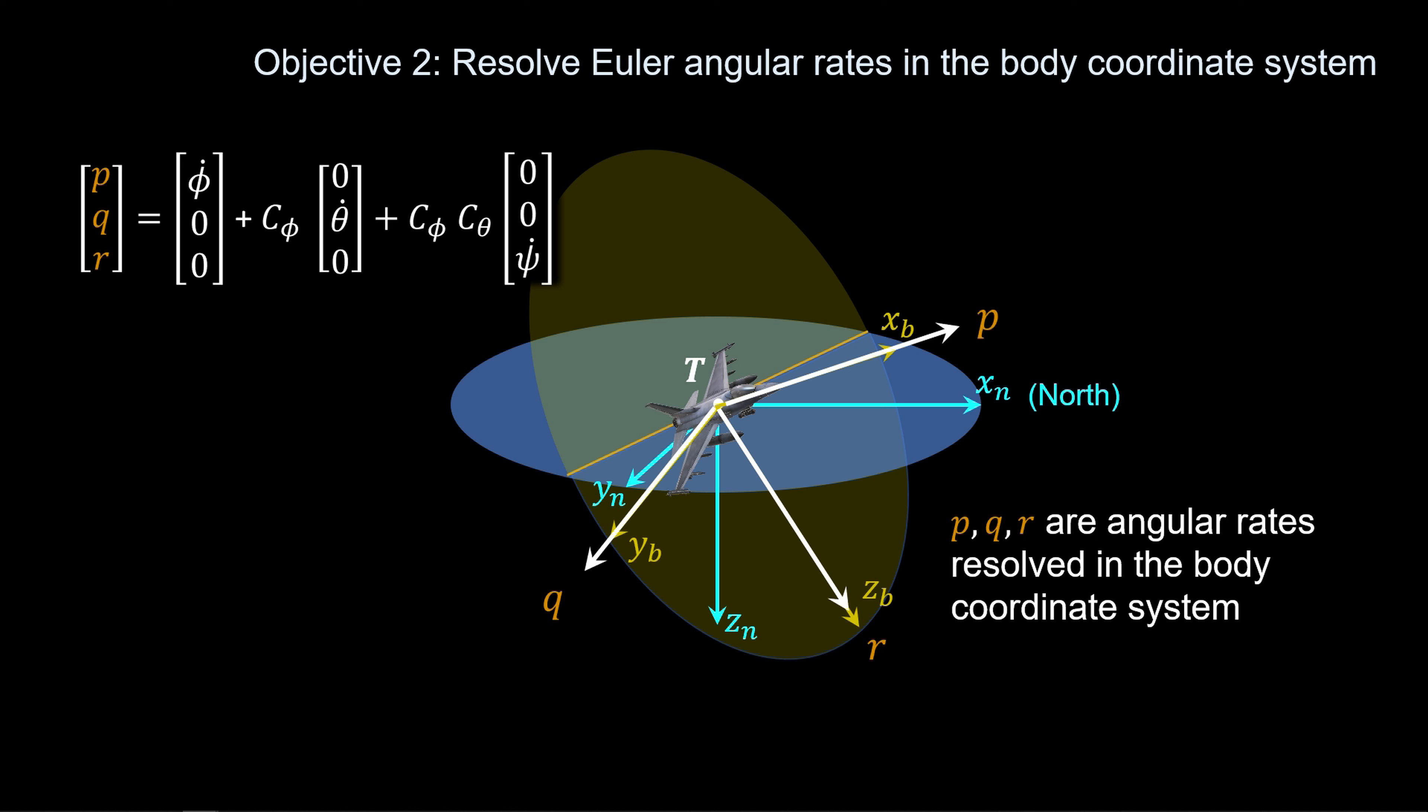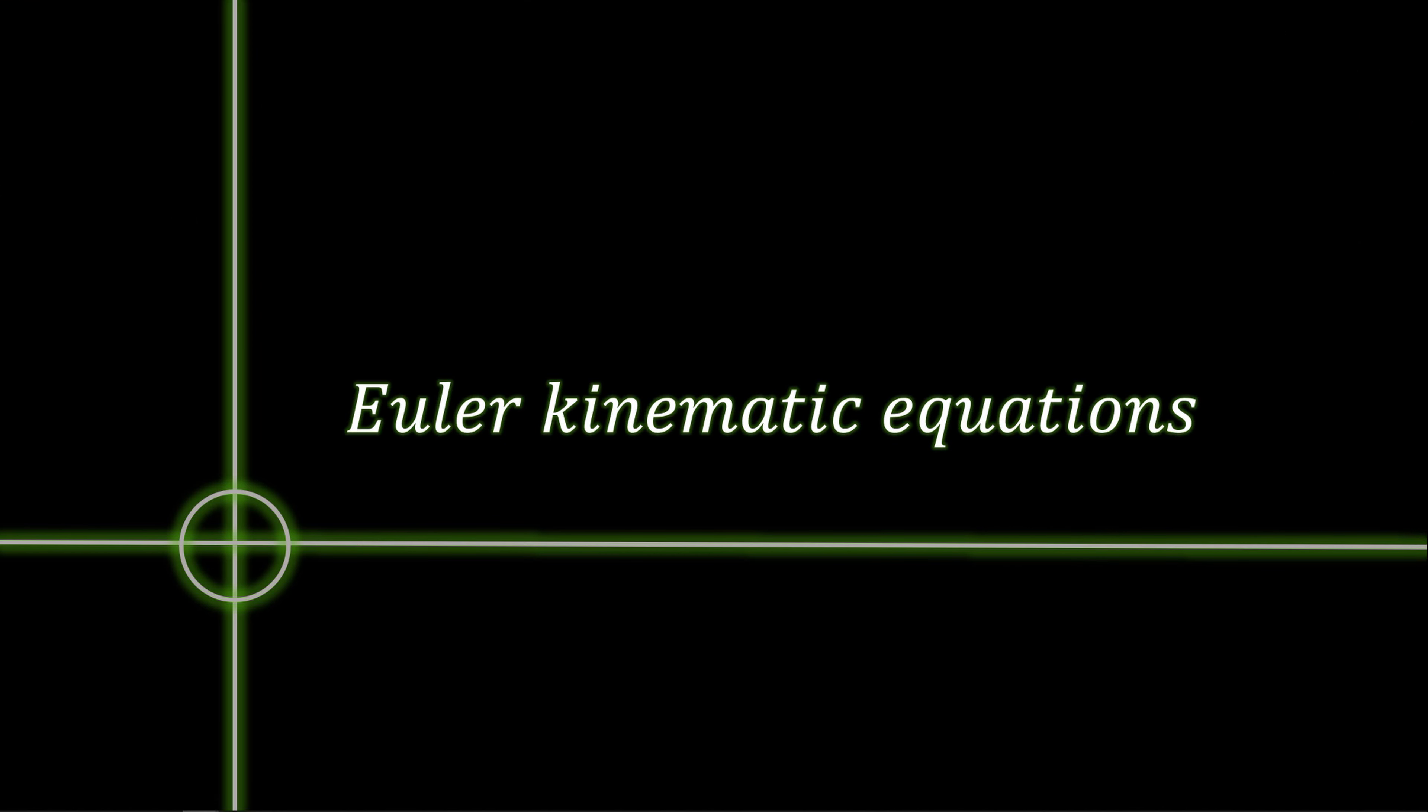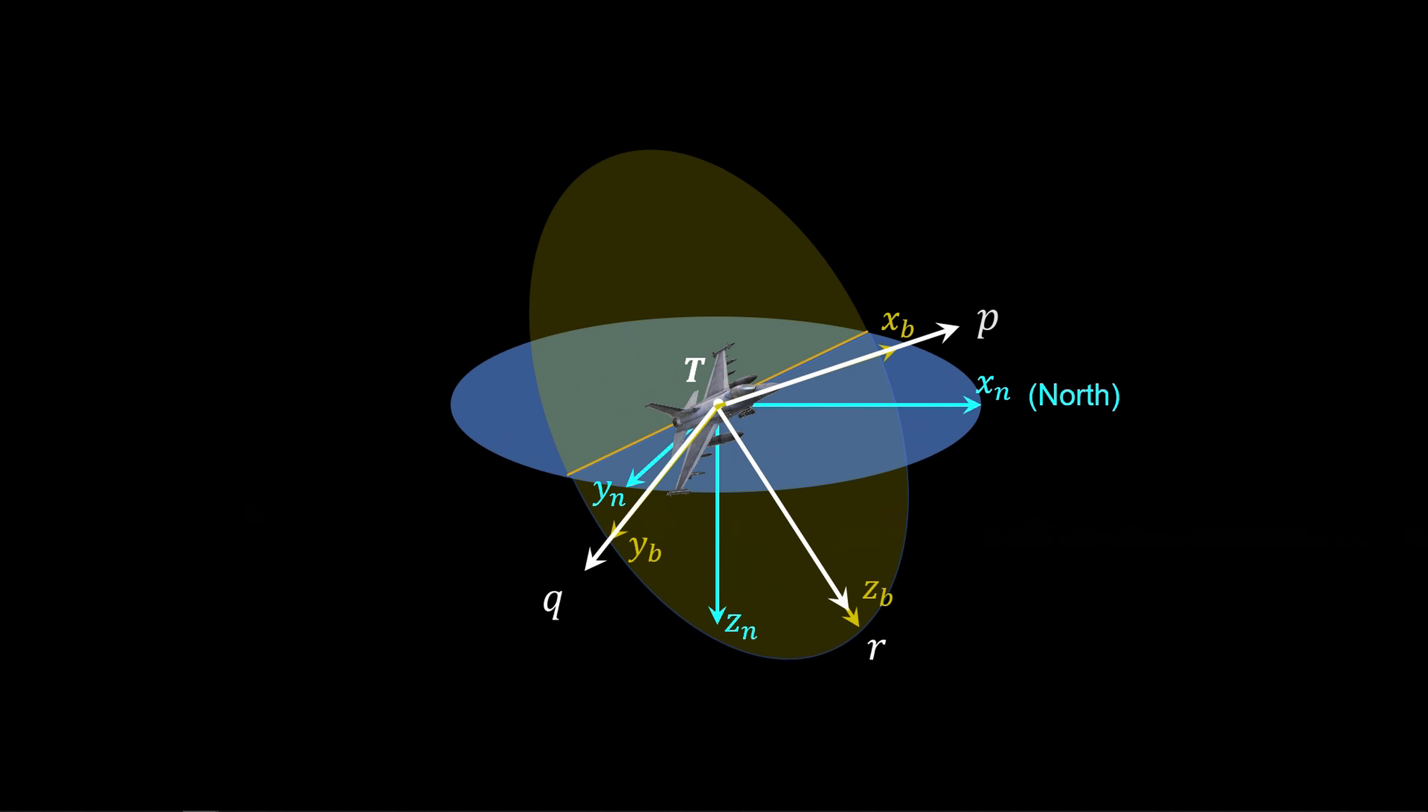Now notice that the Euler rates on the right-hand side of the equation are separated from the body-resolved angular rates. We need to solve these equations for the Euler angular rates phi-theta-psi-dot, and then with them on the left-hand side, we have our desired Euler kinematic equations that we can integrate to instantaneously determine aircraft attitude.